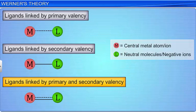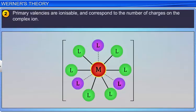The second postulate is that primary valencies are ionizable and correspond to the number of charges on the complex ion. Primary valencies apply equally well to simple salts and to complexes.